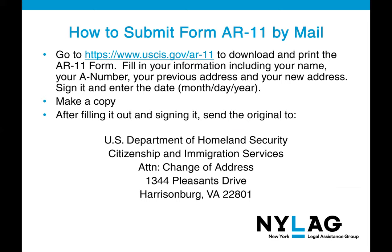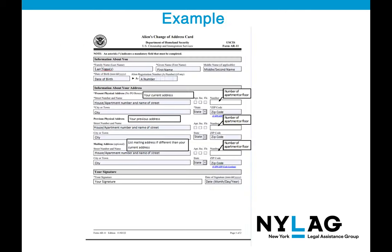How do you submit form AR-11 by mail? Visit the following website to download and print the AR-11 form. Fill in your information, including your name, A number, previous address, and new address; sign it and enter the date. Make sure you make a copy, and then send the original to the following address. Here is an example of a filled-out AR-11 form that is ready to be printed, signed, dated, and mailed by physical mail.